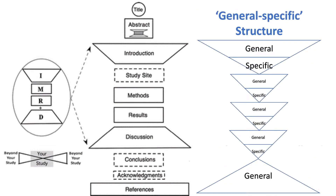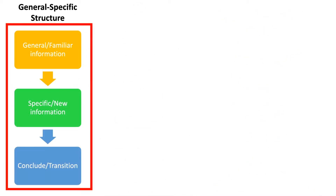As part of this structure, we also need to realize there is an idea called the general-specific structure. While the overall IMRAD structure follows a general-specific-general pattern, each section of IMRAD can follow the general-specific structure, where we should always start each section as generally as possible, moving towards the more specific aims or ideas we are trying to present to our reader. This is very useful to help control the flow of information — starting with general and familiar information first, moving towards specific or new information, then concluding or transitioning towards additional ideas.